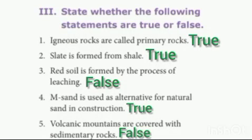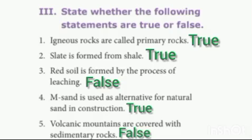1st question: igneous rock is primary rock — true. 2nd question: slate is formed from shell — true. 3rd question: red soil is formed with the process of leaching — false. 4th question: M sand is used as alternative for natural sand in construction — true.